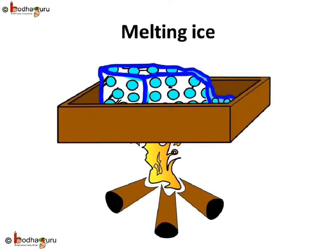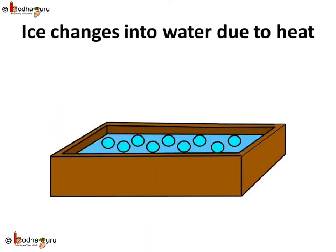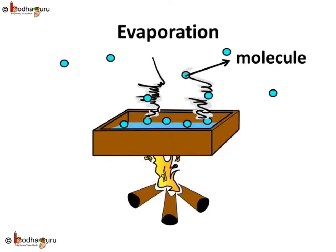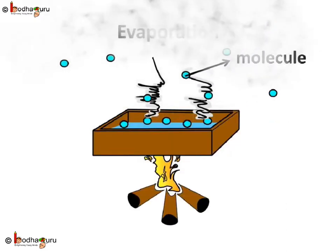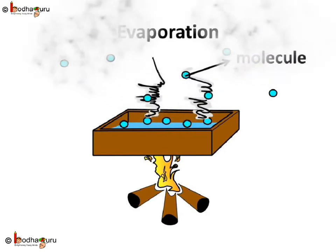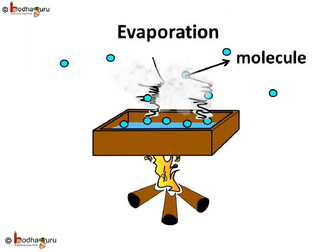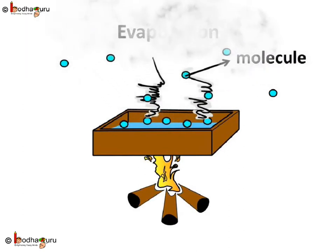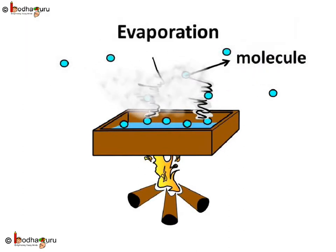In our previous lesson, we learnt that during the state change of a matter, just the spacing between the particles in the matter changes. But how do particles of a matter come closer or move apart?